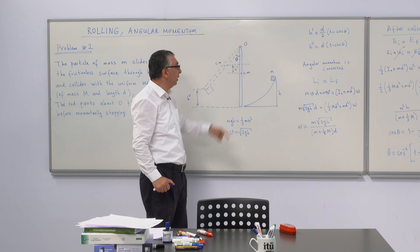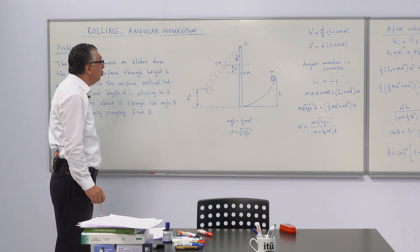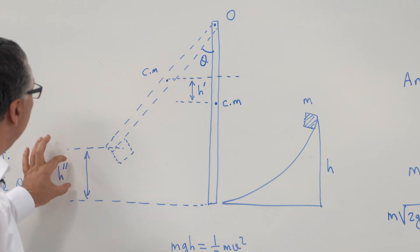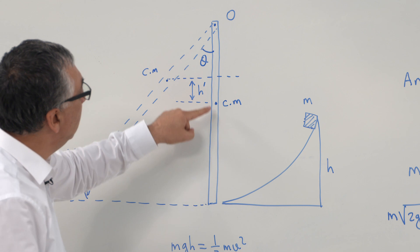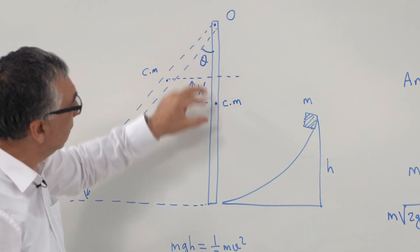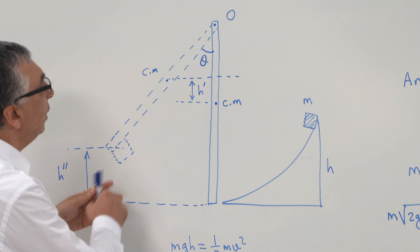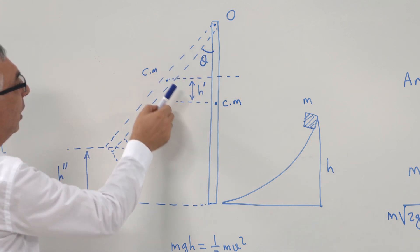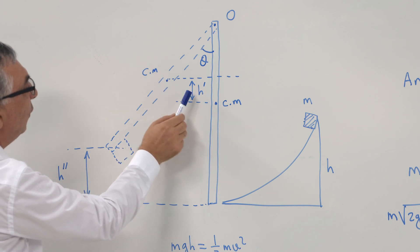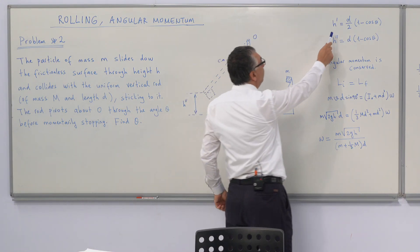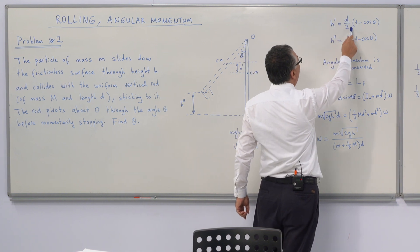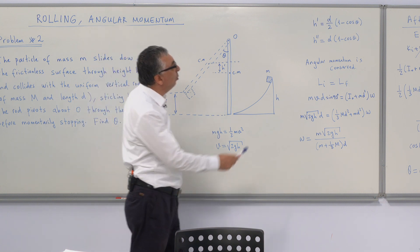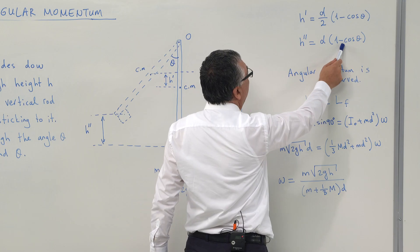First we determine h-prime and h-double-prime. The center of mass of the rod is at its midpoint. When the rod swings through angle theta, the center of mass shifts by h-prime = (d/2)(1 − cos θ). The end of the rod rises by h-double-prime = d(1 − cos θ).